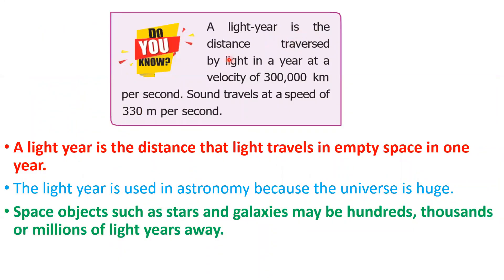What is a light year? A light year is the distance traversed by light in one year at a velocity of 3 lakh kilometers per second. A light year is the distance that light travels in empty space in one year. The light year is used in astronomy because the Universe is huge. Space objects such as stars and galaxies may be hundreds, thousands, or millions of light years away.